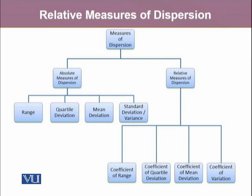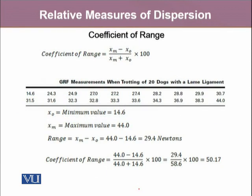For range, there is the coefficient of range. For quartile deviation, there is the coefficient of quartile deviation. For mean absolute deviation, or mean deviation, there is the coefficient of mean deviation. And for standard deviation, there is the coefficient of variation. All these coefficients of dispersion give their answers in terms of percentages — they do not include any units of the observations, whereas absolute measures of dispersion do report the units of measurement.